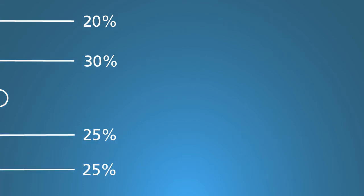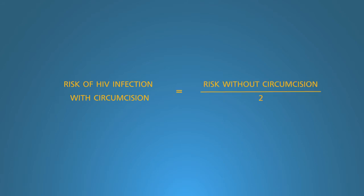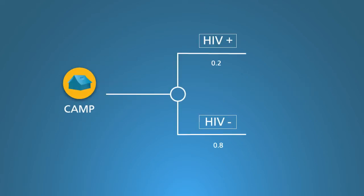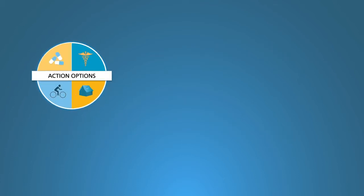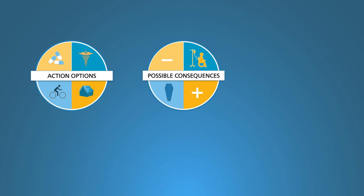With the circumcision camp, the chance of HIV infection is specified as 20%. This is based on three excellent clinical trials which show that circumcision lowers the risk of HIV infection by 50%. Half of 0.4 is 0.2, thus the likelihood of no HIV infection is 80%. This is the core structure of the decision tree: action options followed by chance nodes, which represent consequences.